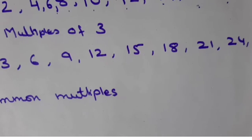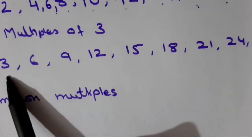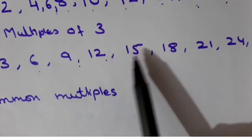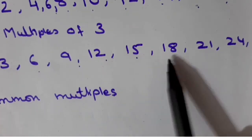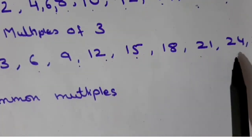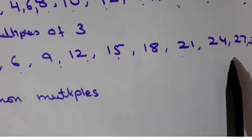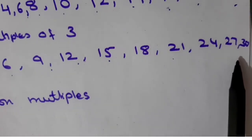And the first ten multiples of three are 3, 6, 9, 12, 15, 18, 21, 24, 27 and 30.